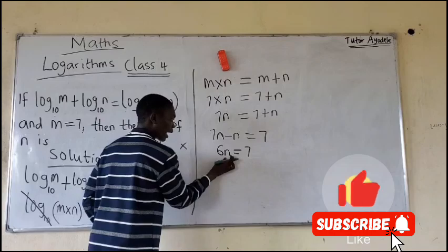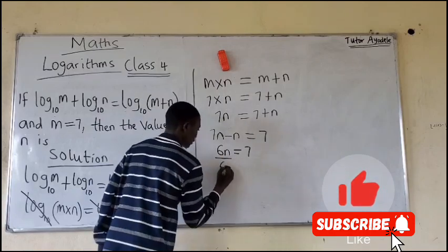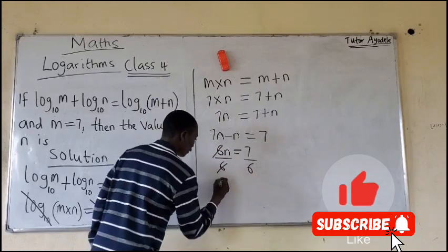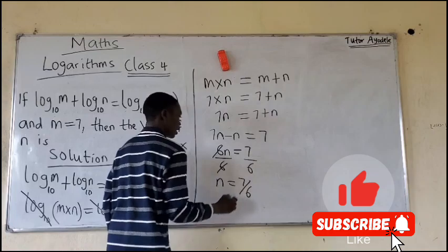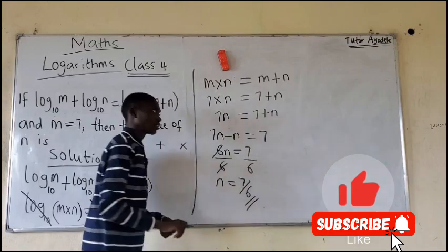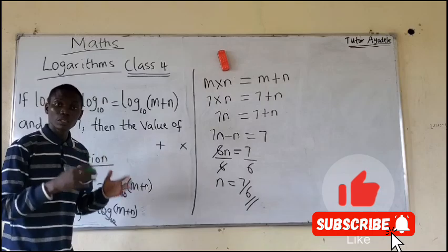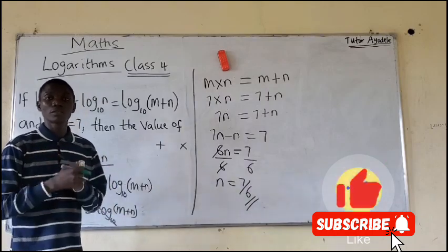So what are you to do? Since you are looking for the value of N, you divide both sides by 6. Here we have N equals 7 over 6, and that is our final answer. Please do well to subscribe to my channel, like, comment, and share to your loved ones. Thank you.